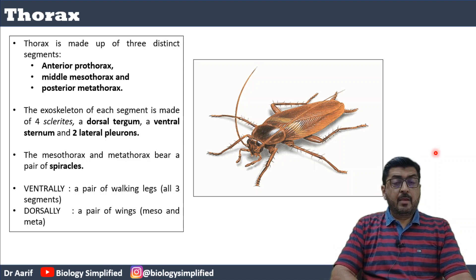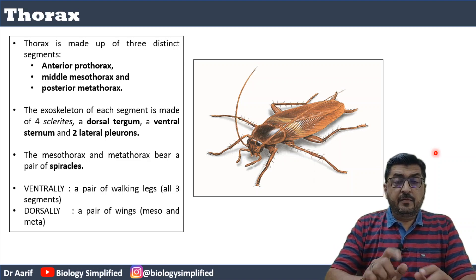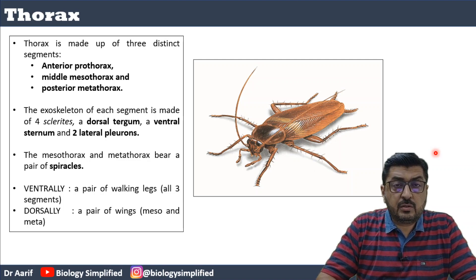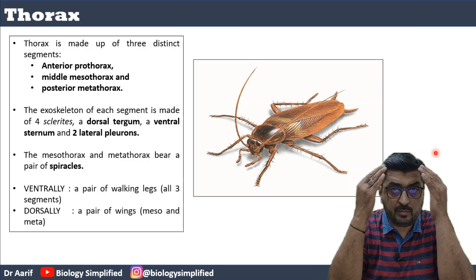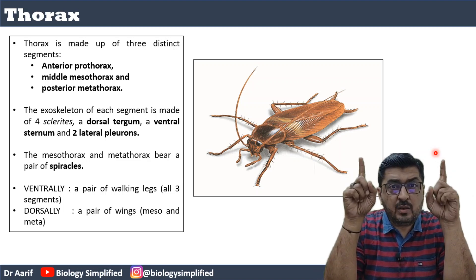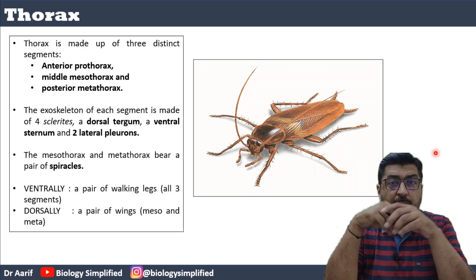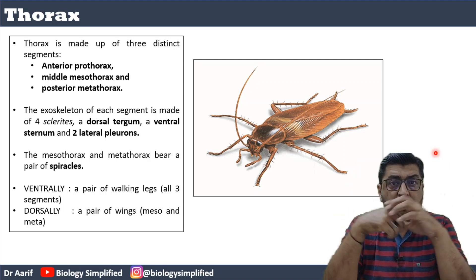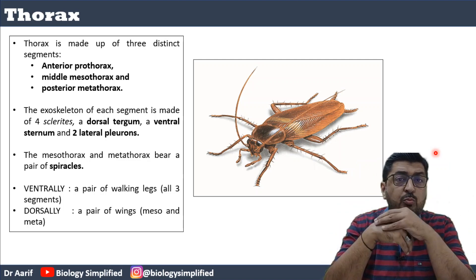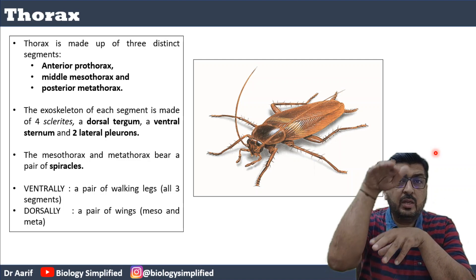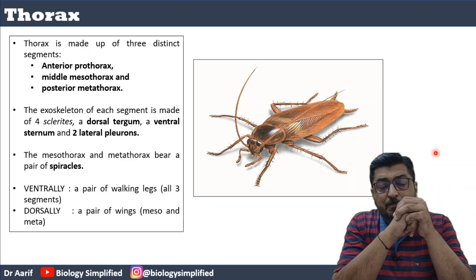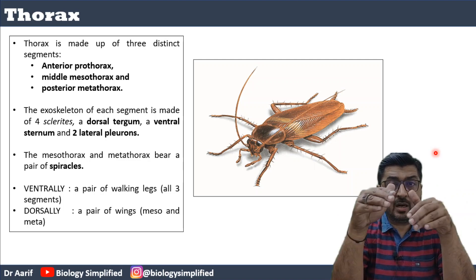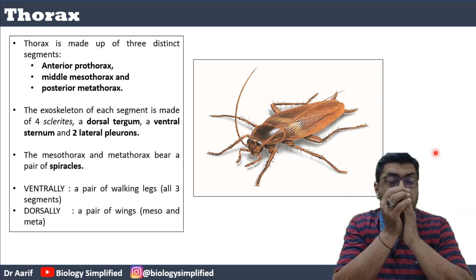Welcome back. In the first video, we finished the structure of the head of the cockroach. We studied that it has a pair of compound eyes, a pair of antennae, a pair of fenestrae, and mouth parts which include labrum, labium, mandibles, and maxillae, along with a tongue-like structure called the hypopharynx.